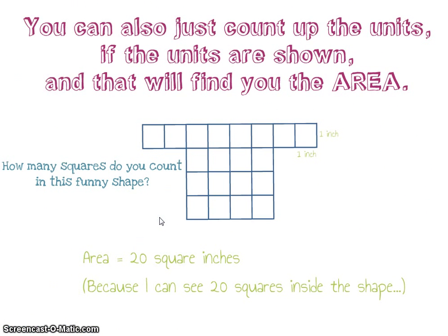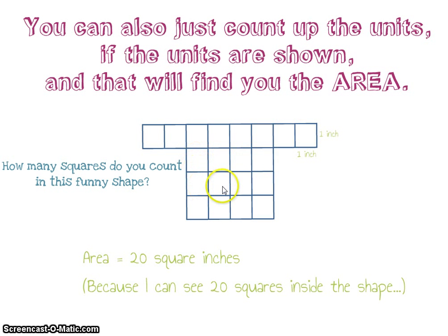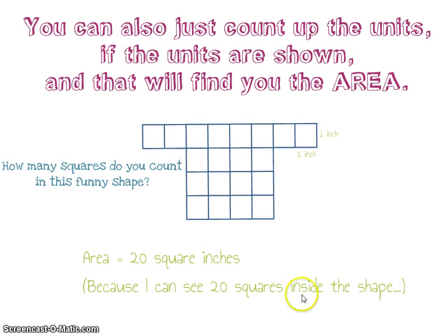You could also just count up the units. So if the units are shown, especially in funny shapes, that will help you find the area too. Here I have a one-inch square by one-inch square grid. Counting the squares in this funny shape — one through 20 — that is also 20 square inches. I can see and count those 20 square inches inside the shape.